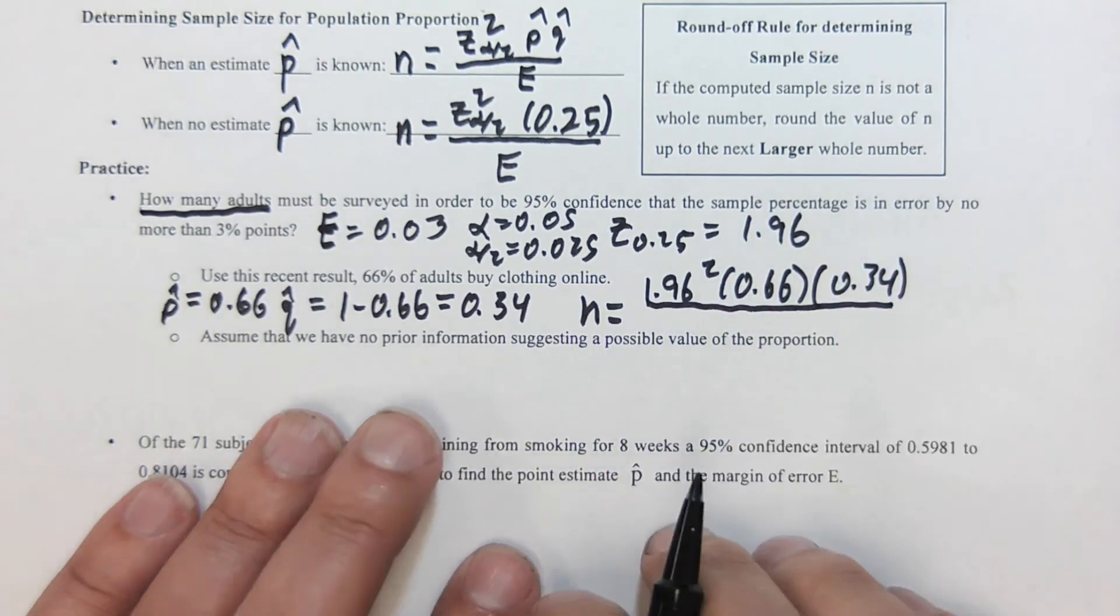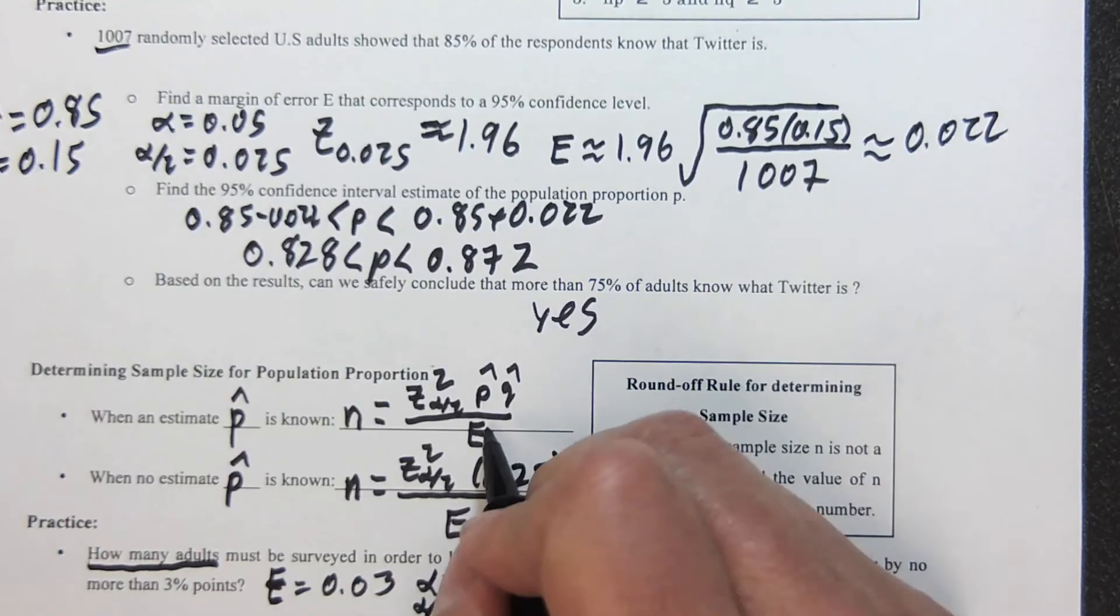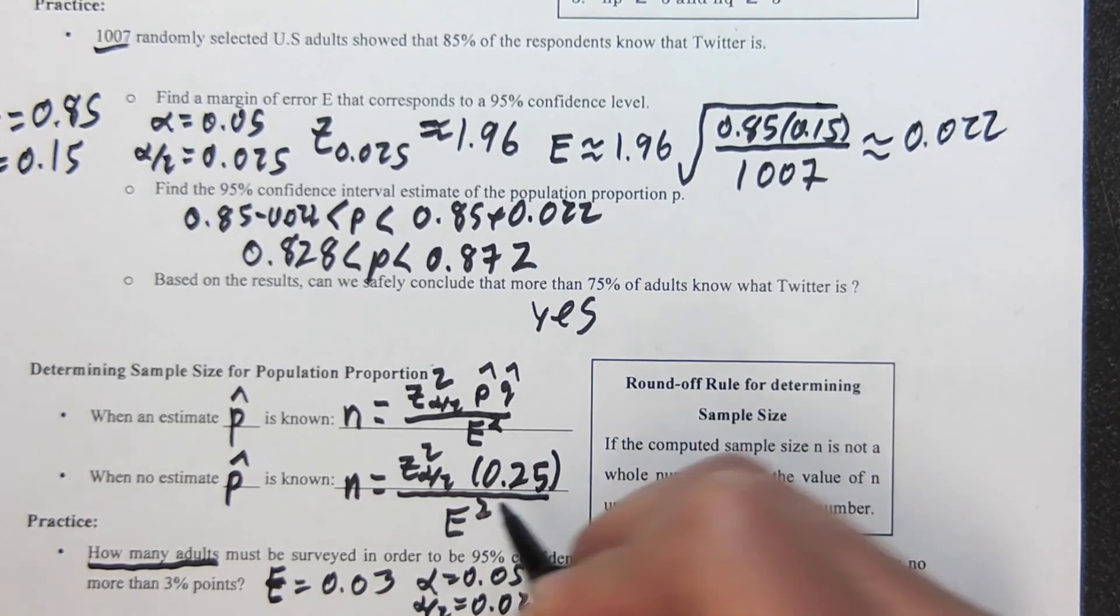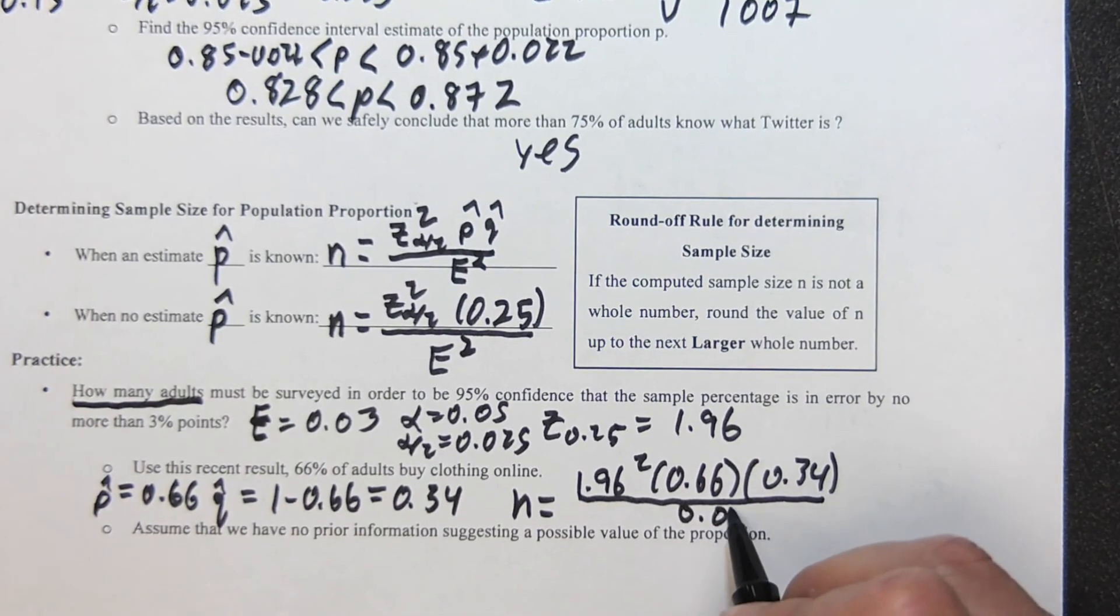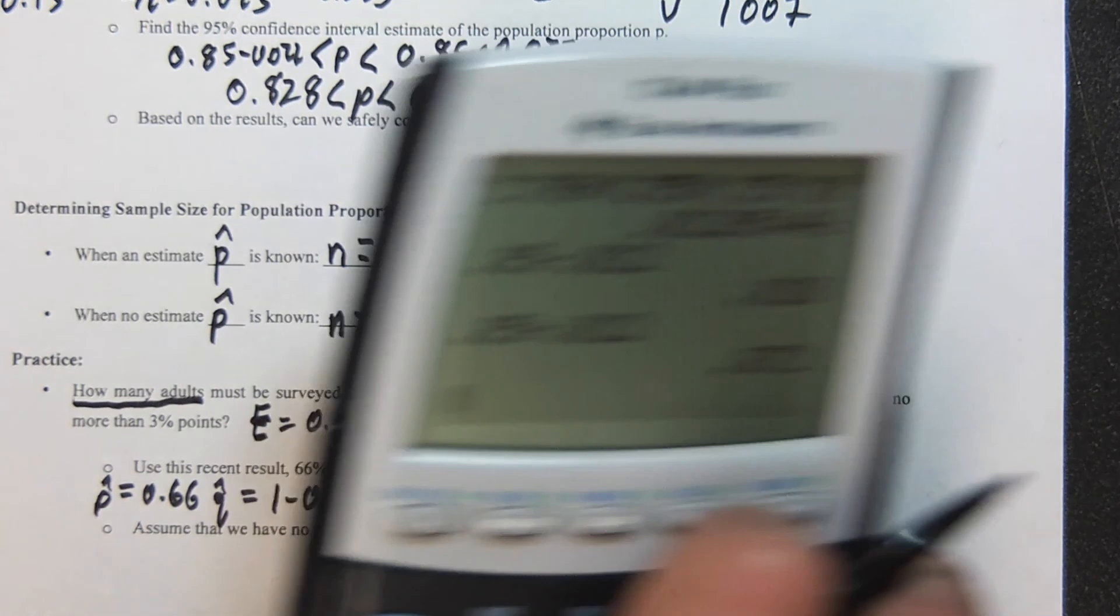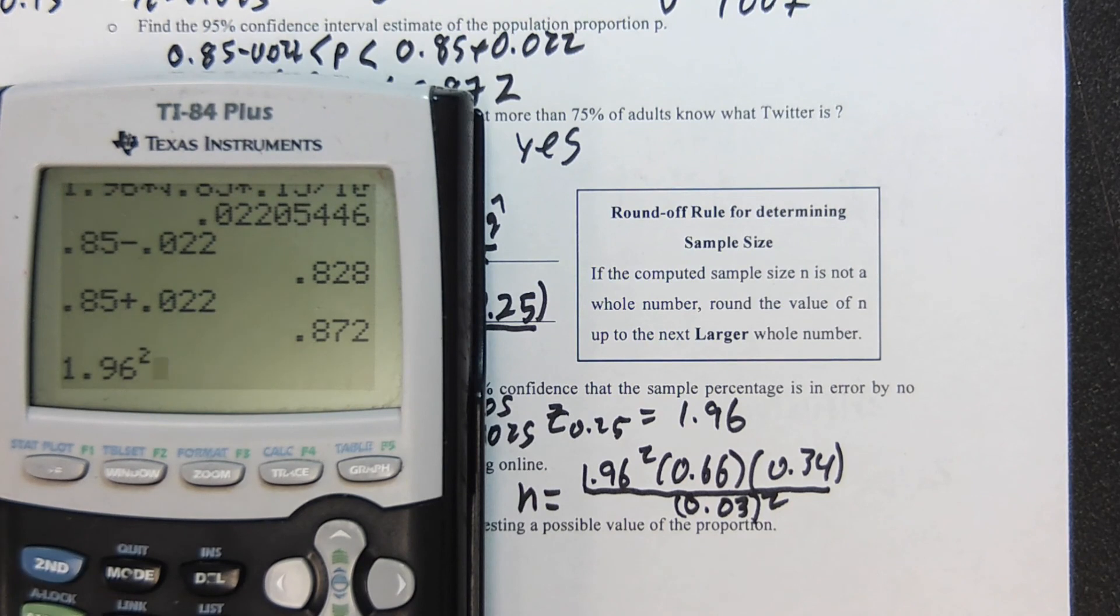So how many adults is the underlying question. It's going to equal—we're going to use this formula because p hat is known—1.96 squared times 0.66 times 0.34 divided by—wait, I made a mistake on these formulas, this should be e squared—0.03 squared.